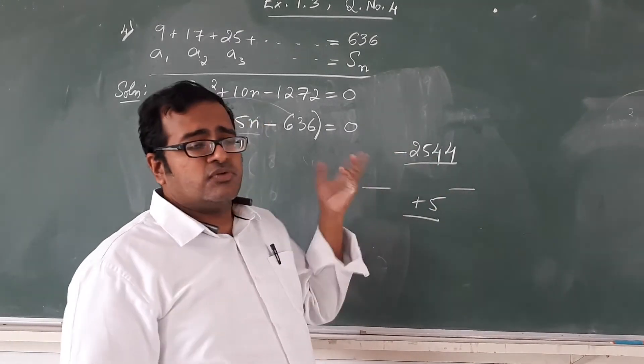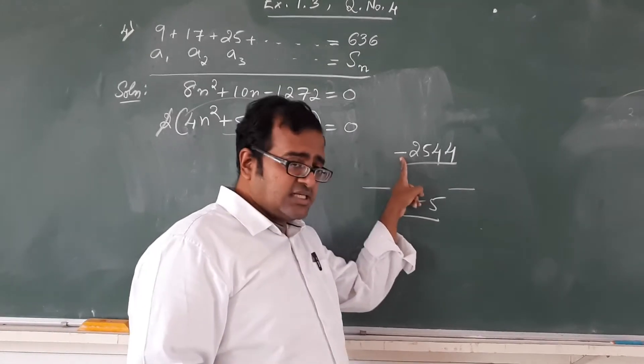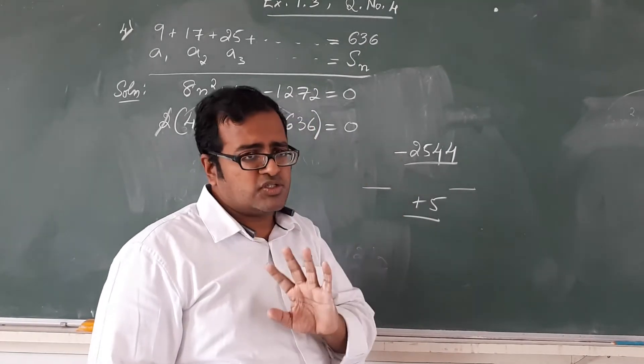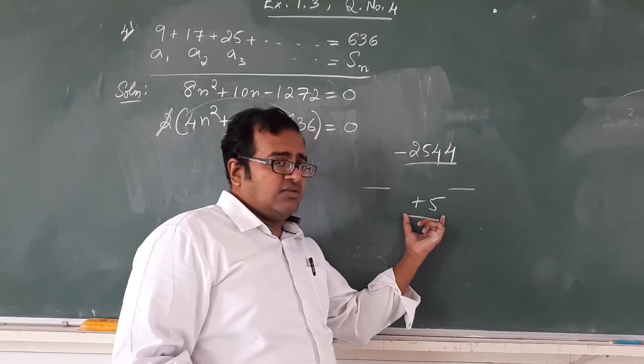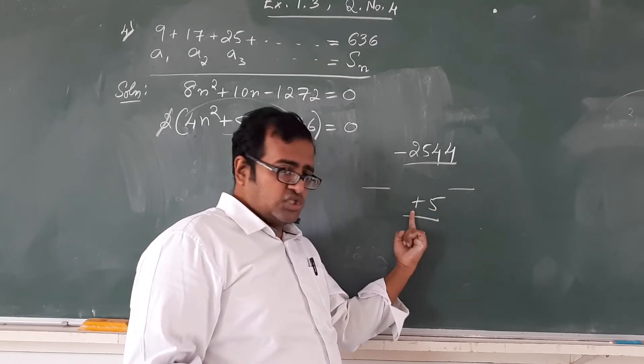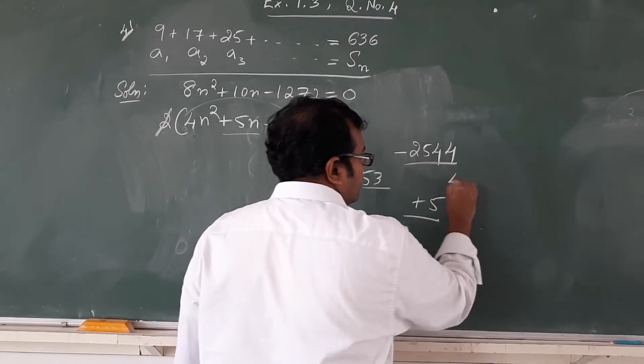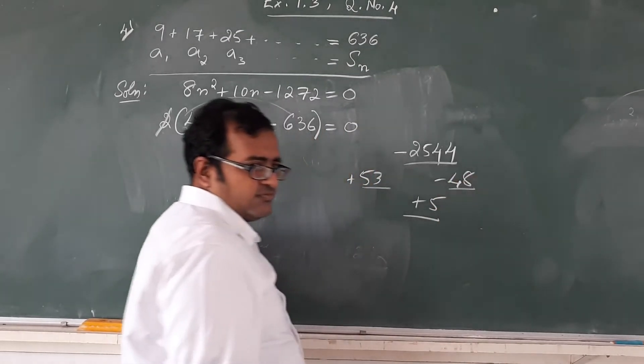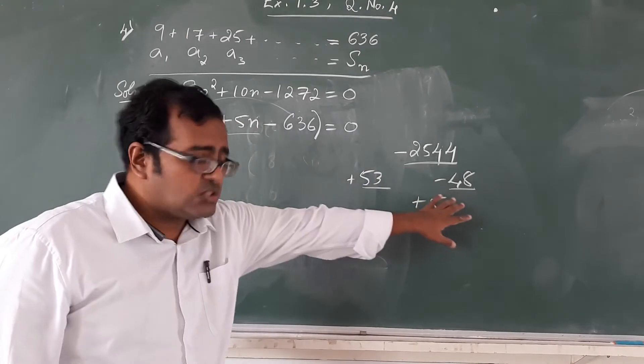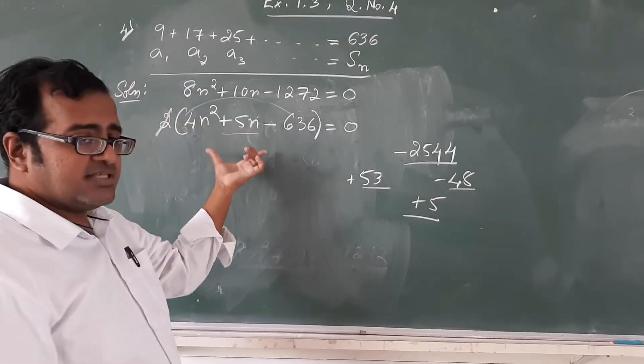So which one should be positive, which one should be negative? Since the product is negative, one of them must be negative, one should be positive. The bigger number sign will be given to the sum. So sum is positive means the bigger number should be plus. So 53 remains positive and 48 becomes negative. So we will use these two factors and split the center term.